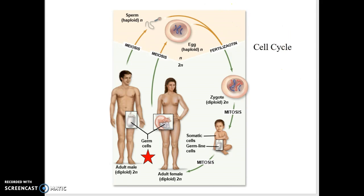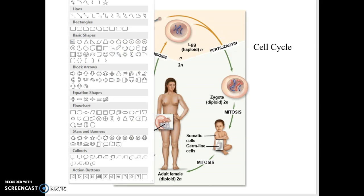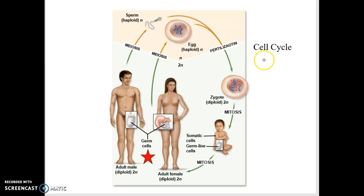The zygote is going to start going through this development process right there, and it's going to develop through cell cycle mitosis. But the key is you're a diploid organism.